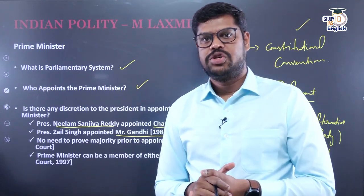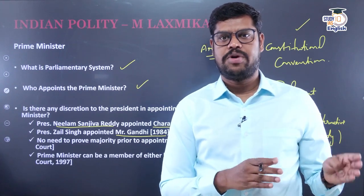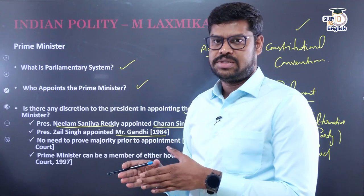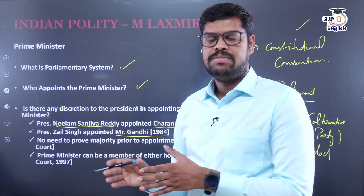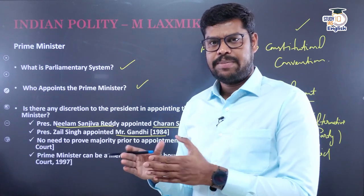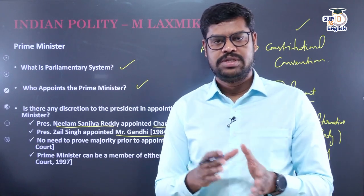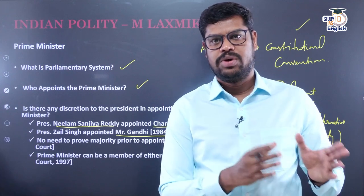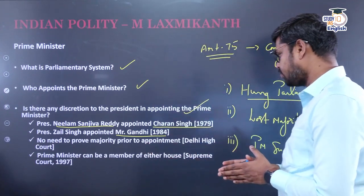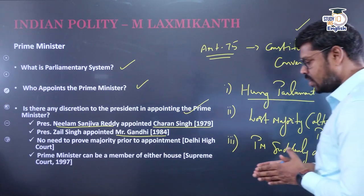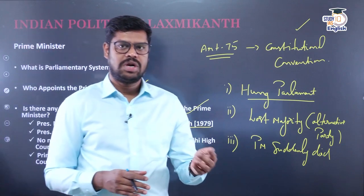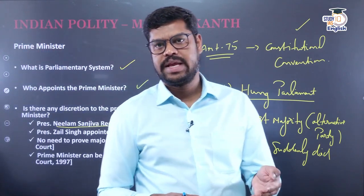Looking at constitutional history: in 1966, Indira Gandhi was appointed as Prime Minister — she was a member of Rajya Sabha. In 1996, H.D. Deve Gowda was appointed as Prime Minister and was also a member of Rajya Sabha. In 2004, Manmohan Singh was appointed as Prime Minister — he was also a member of the Rajya Sabha. So there were instances where a person from the Rajya Sabha was appointed as Prime Minister, or even someone who was not a member of either house.